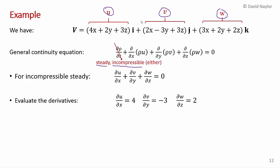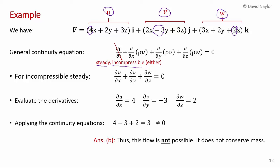Substituting back into the continuity equation: 4 + (−3) + 2 = 3, which does not equal zero. The continuity equation requires these to sum to zero, so this flow is not possible — it does not conserve mass and does not obey the conservation of mass principle. Therefore, it is not a valid solution. That completes this video.